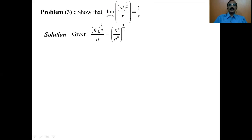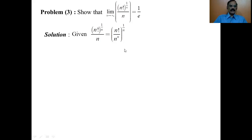The given expression, n factorial to the power 1/n divided by n, can be written as n factorial divided by n to the power n, whole to the power 1/n. This is done so that the expression matches the form of the n-th root of a_n used in Cauchy's Second Theorem, with the n in the denominator written as n to the power n, whole to the power 1/n, so the two n's cancel and we are left with only n.